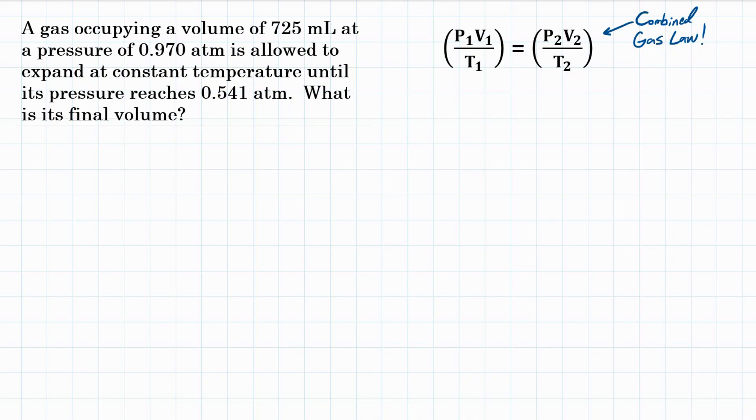So let's write down what the problem gives us. We have 725 milliliters, that is a volume, and we'll say V1 for volume at time 1, and that is 725 milliliters. We have a pressure of 0.970 atmospheres at the same time, so P1, meaning at the same time, 0.970 atmospheres. And then we have 0.541 atmospheres at a later time, so we'll call that P2, 0.541 atmospheres. And it's asking for the final volume, so it wants a volume at this second instant. So, we don't know what that is. We have to calculate it.